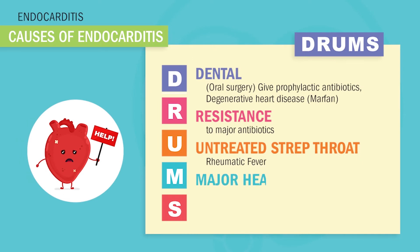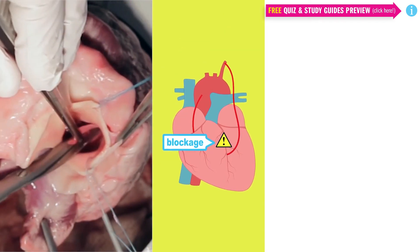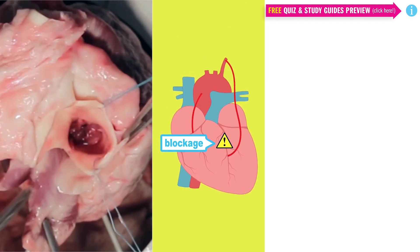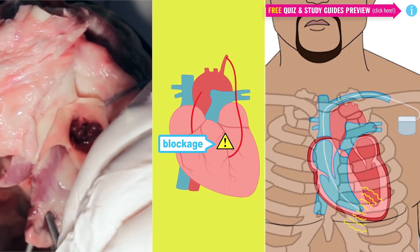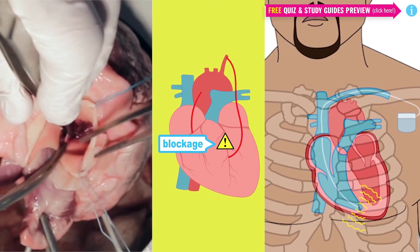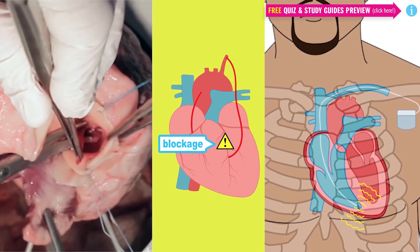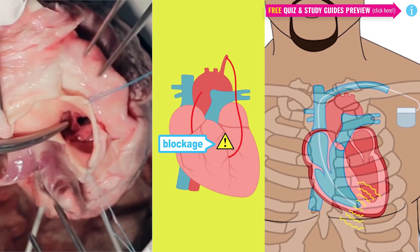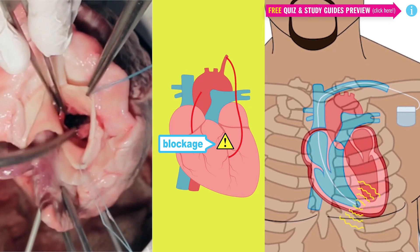Who would have ever thought that a sore throat could lead to a broken heart? M is for major heart surgery. We all know that repairing heart valves can be risky, but even CABG — coronary artery bypass graft for heart attack patients — or even implanting pacemakers. Anything that opens the heart up during surgery to possible infections is a huge risk for endocarditis.